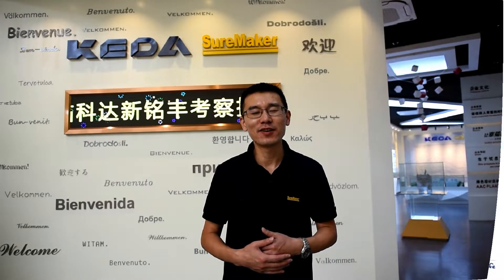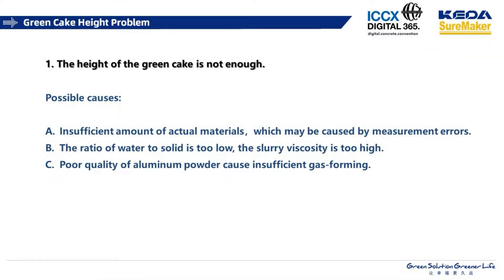Here, let's see some cases. The first problem we would like to talk about is the height of the green cake. If we find the height of the green cake is not enough, we may consider insufficient actual materials, which may be caused by measurement errors. The ratio of water to solid is also very important, and we will mention this issue frequently in the following problems.